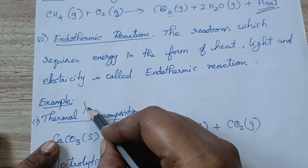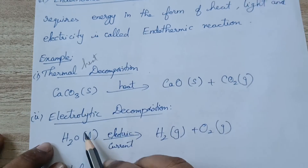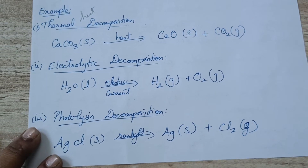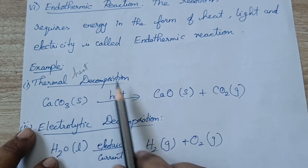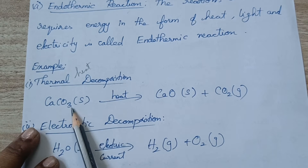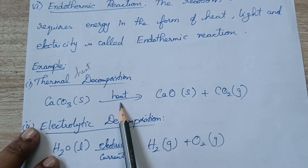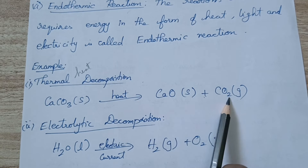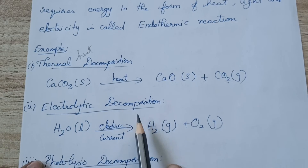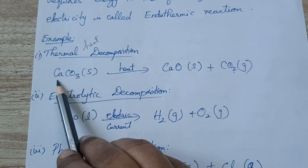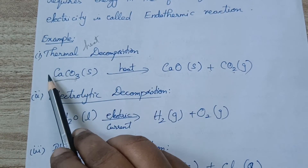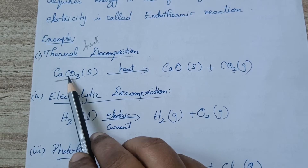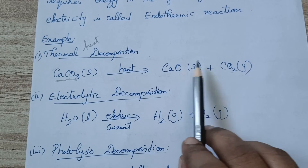Thermal means heat is involved. Electrolytic means electric current is involved. Photolysis means sunlight or light is involved. In thermal decomposition, calcium carbonate when heated decomposes into calcium oxide and carbon dioxide gas. This is a decomposition reaction — only one reactant decomposes into two or more products.